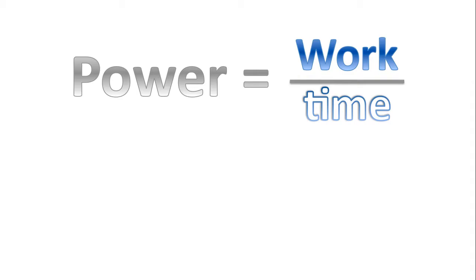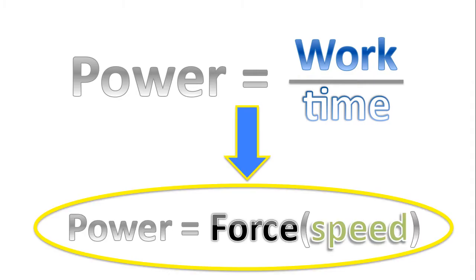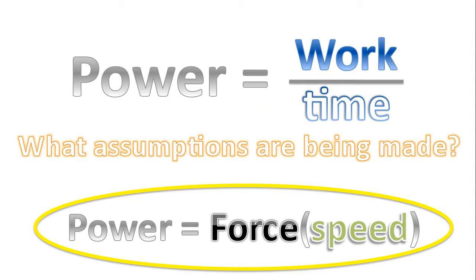And so the definition of power is work over time. Now in a few moments we'll see that power can be written as force multiplied by speed. So the question is, what assumptions are being made when we use the formula that is circled in yellow?